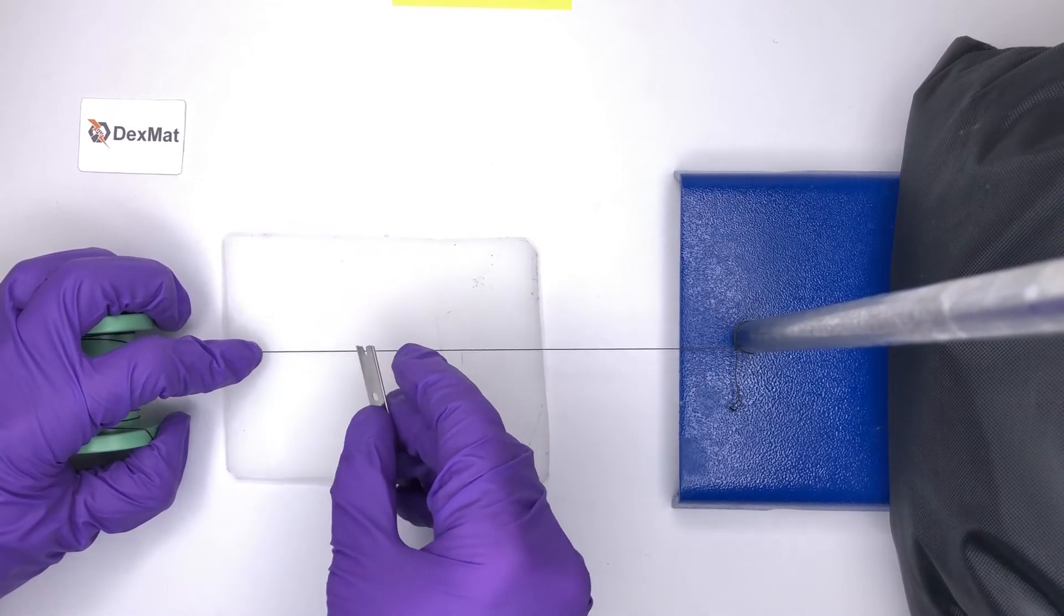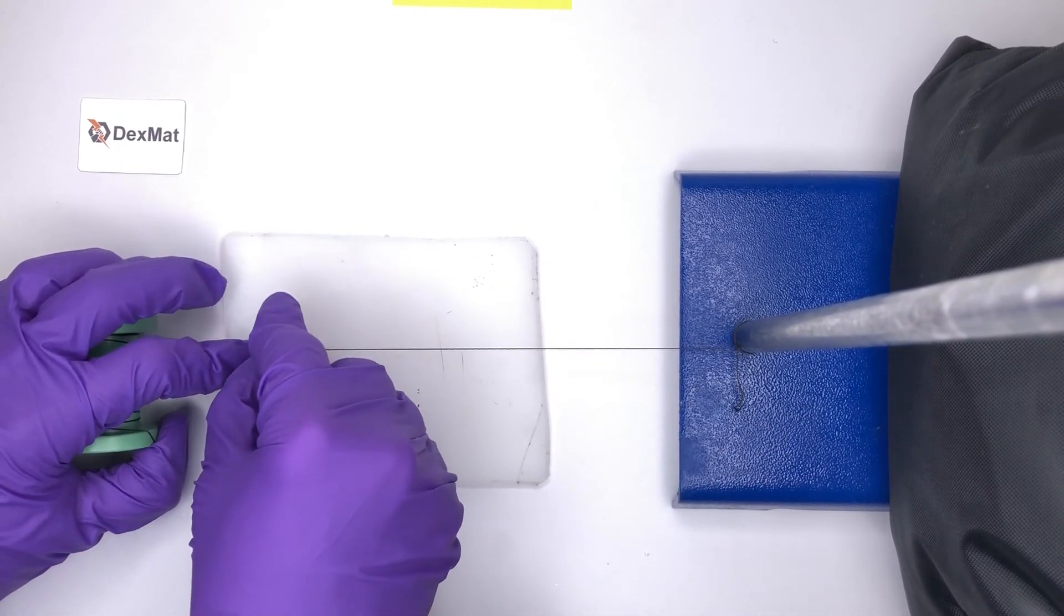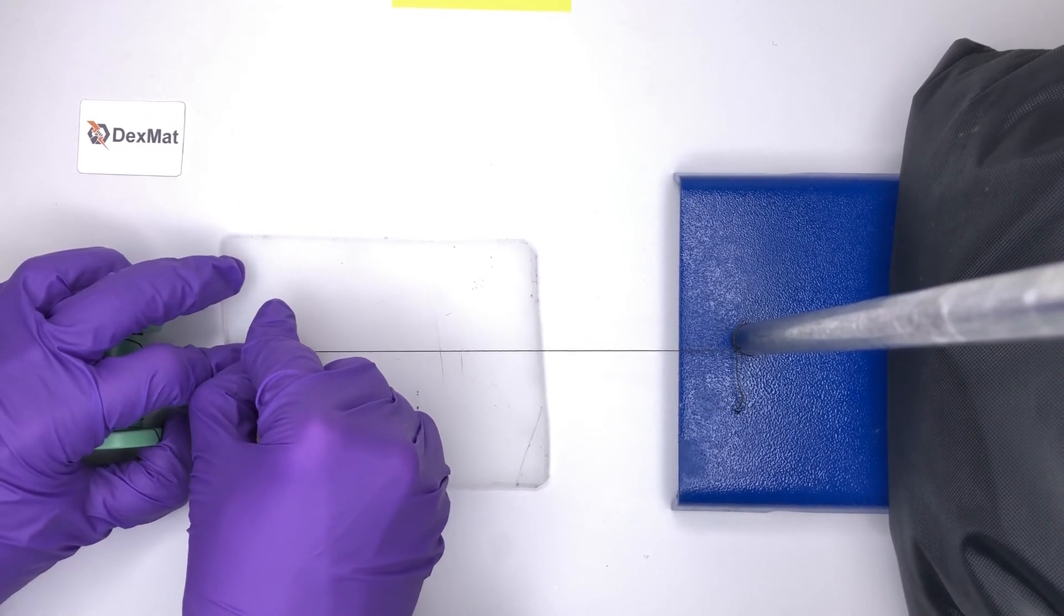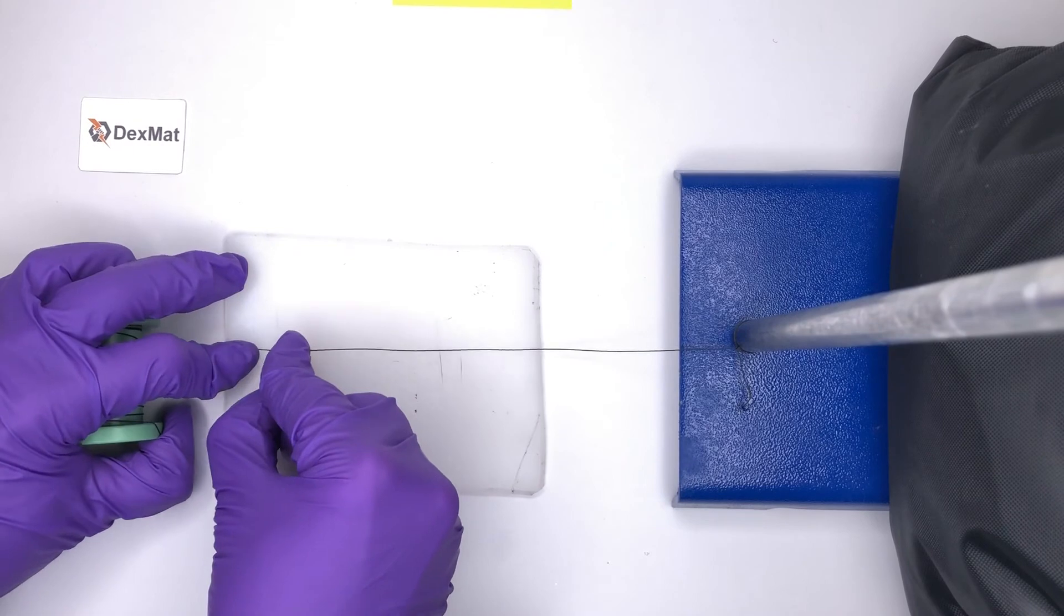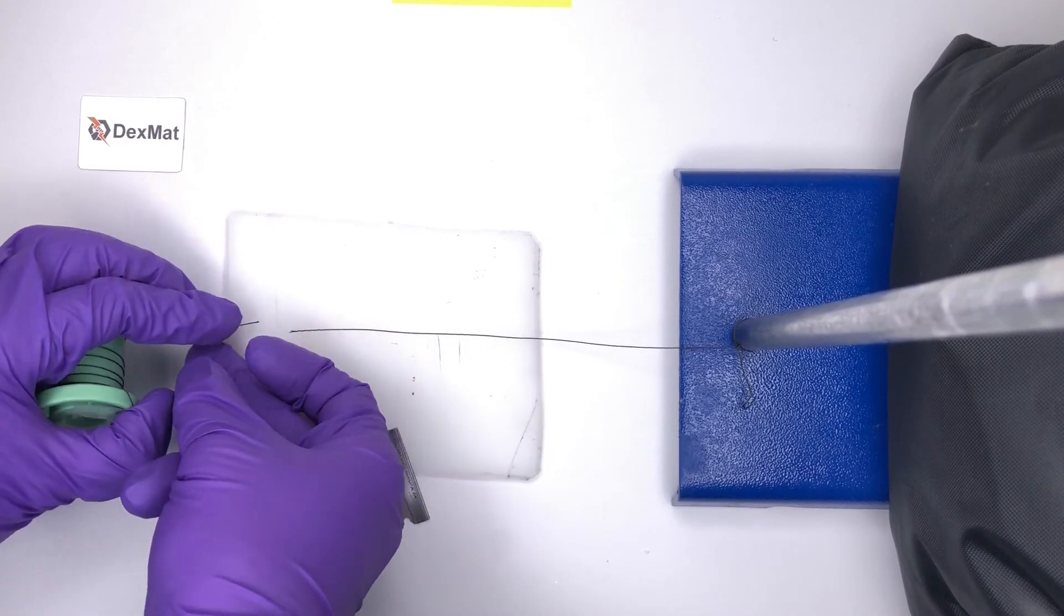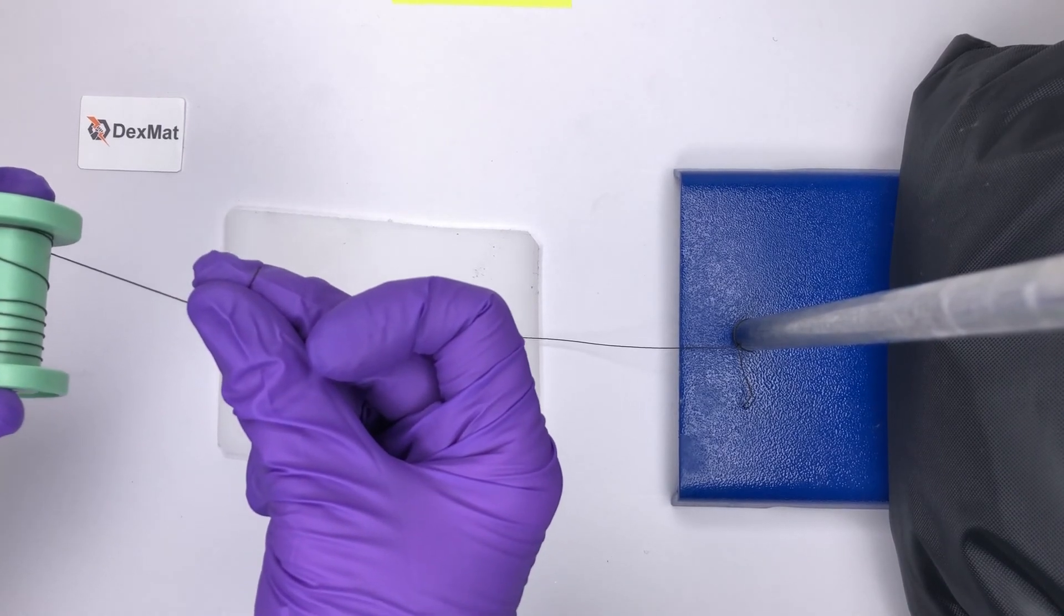Here you can see it's under tension. As I put my razor blade down onto it, I press down and make a cut. You get a nice clean cut, and this is how you cut carbon nanotube thread. Thank you for watching.